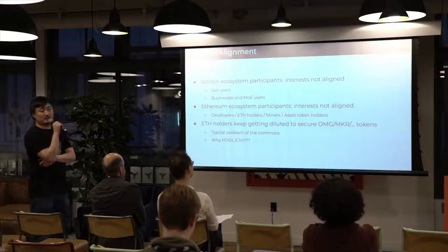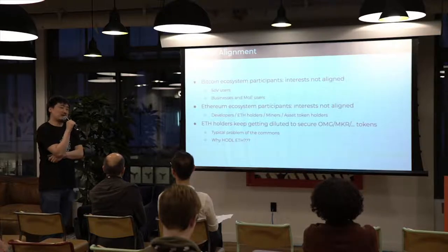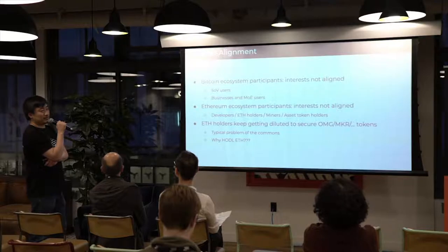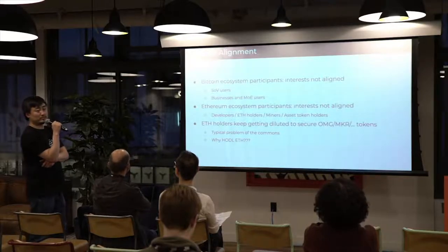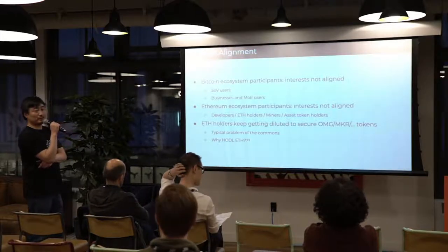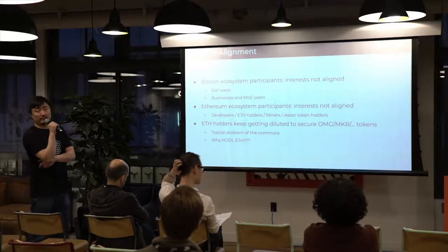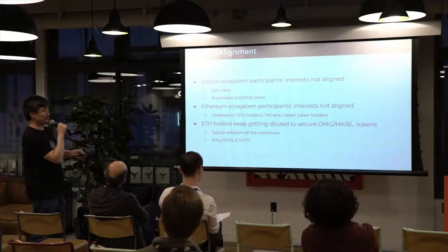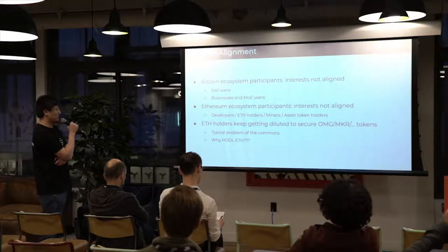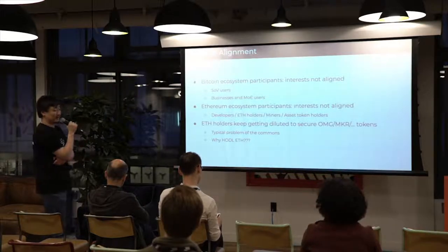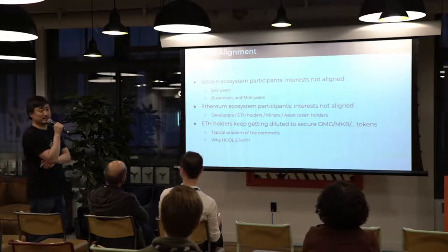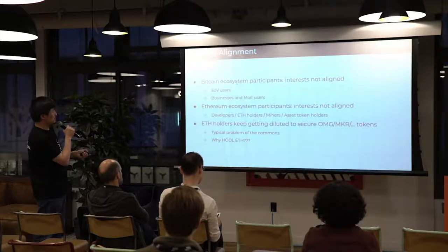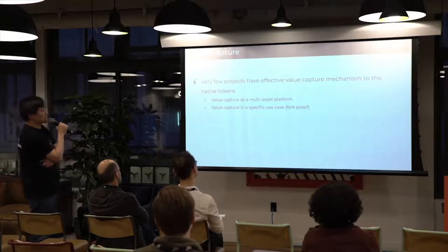ETH holders keep getting diluted to secure what are essentially asset token holders. For example, if I'm a MakerDAO MKR token holder, I want to hold my token but I may not actively use it. To keep my MKR token secure on the Ethereum network, it's the ETH holders that keep getting diluted over time to secure all the assets on the Ethereum framework — yet the success of the MKR token may not contribute back to the security of ETH. So platform token holders are diluting themselves to secure other tokens, which raises the question: why should I hold ETH if I don't need it for gas transactions?